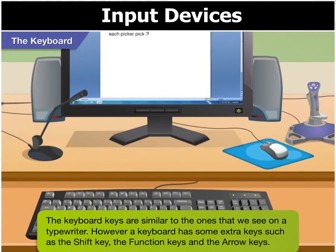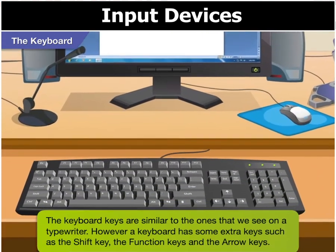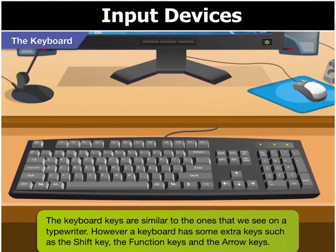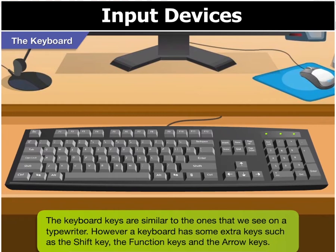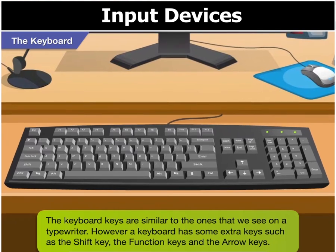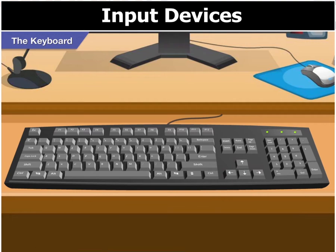Correct Goggle, the keyboard keys are similar to the ones that we see on a typewriter. But then it has some extra keys such as the shift key, the function keys and the arrow keys, which are used for various operations.